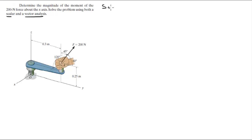Okay, this is the scalar analysis. So first, what you need to do is find all the points involved. You got point A which sits at 0 in the i plus 0.3 in the j plus 0.25 in the k. So you got this vector right here.